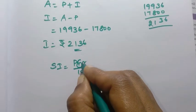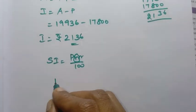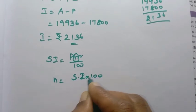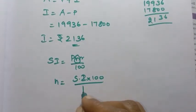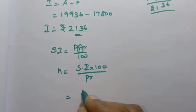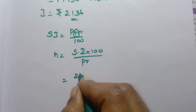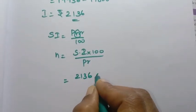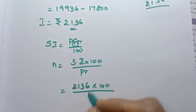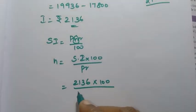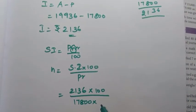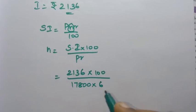Simple interest is equal to PNR by 100. We need to find N. So N = SI into 100 by PR. Substituting: SI is Rs.2,136 into 100, principal is 17,800, rate of interest is 6%.